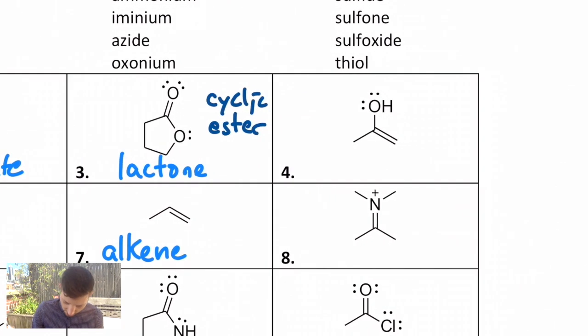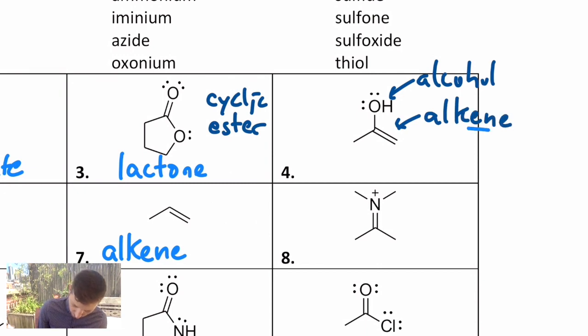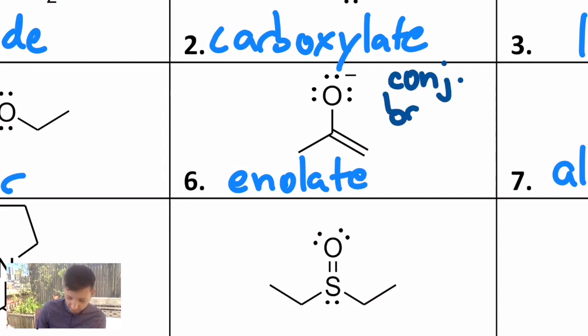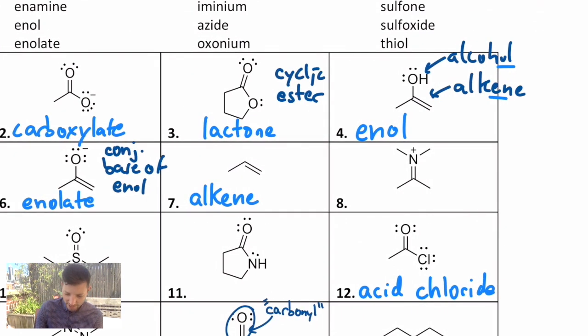Number four looks like the combination of an alcohol and an alkene so they hybridize those and you get what's called an enol. Number six is the conjugate base of an enol and it's called an enolate. Conjugate base of the one we just did. Remember what conjugate base means. That means it's what it looks like without the H. So if you take an enol and you lose that H with an anion left behind you get the conjugate base of an enolate.